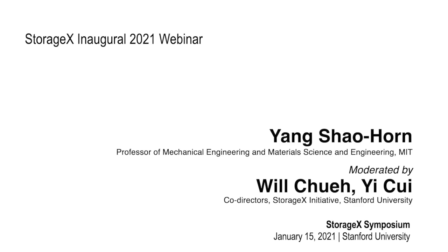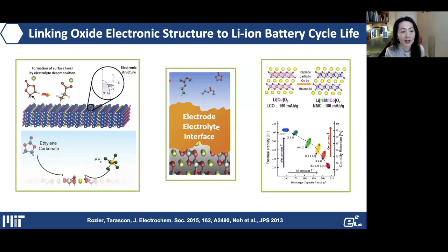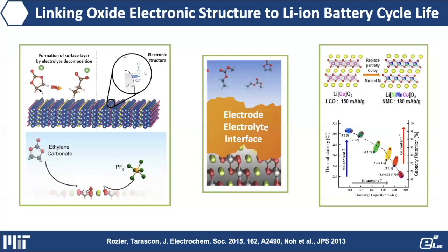We're particularly interested in understanding how the electronic structure of oxides used in positive electrodes — specifically the metal-oxygen bond covalency, essentially how the Fermi level relative to the oxygen p-band of the oxide — interfaces with aprotic electrolytes, and how the electronic structure would influence the reactivity at the interface, resulting in degradation or oxidation products. We have been utilizing a library of NMC materials to test and examine the reactivity between oxides and carbonate-based electrolytes.